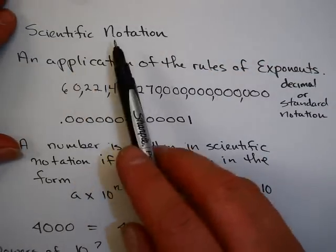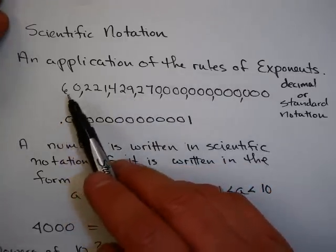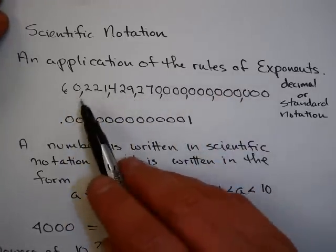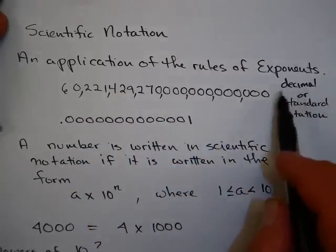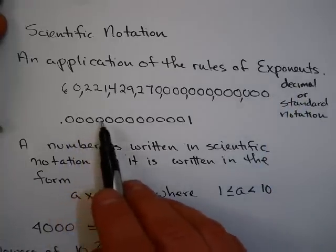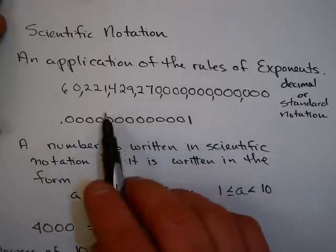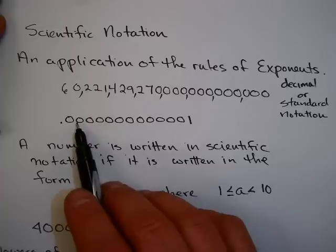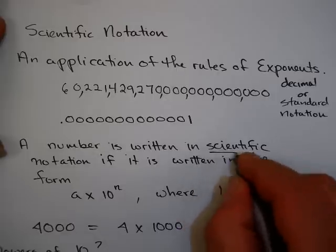In our world, we have some very large and some very small numbers. Scientific notation is an application of the rules of exponents to help us write very large numbers. This really large number is actually a number used in chemistry, and it's very, very long. When we write a number this way, it's written in decimal or standard notation. This number here is the approximate time in seconds it takes your computer to do one operation — that's a really, really small number. These numbers have a lot of zeros, and it would be useful to have a more compact way to write them. The way we do this is called scientific notation.